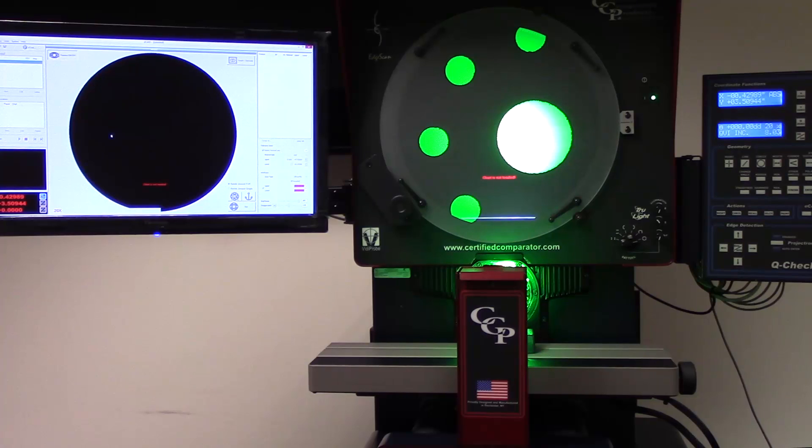Hi, I'm Chris Raw, Applications Engineer for Certified Comparator Products and today we're going to be showing you a CC14 with ECAD. It has a corrected image type and a stage size of 12 by 15 by one and a half inches.